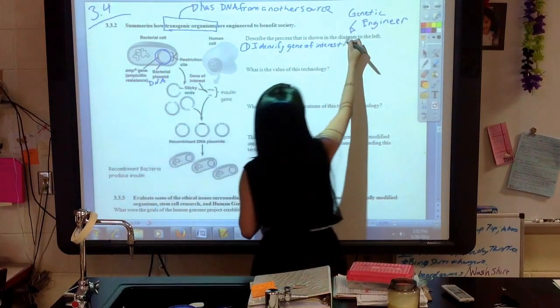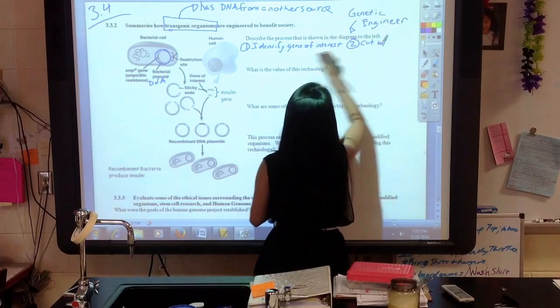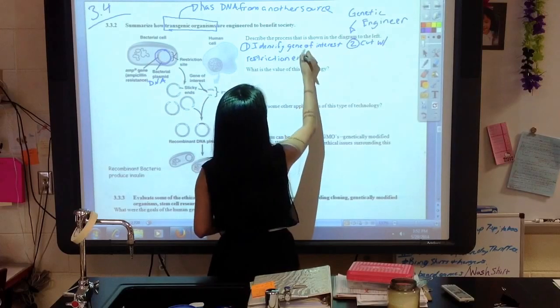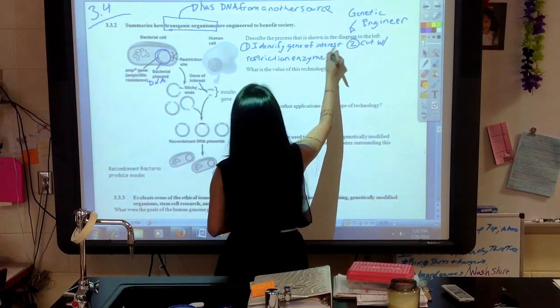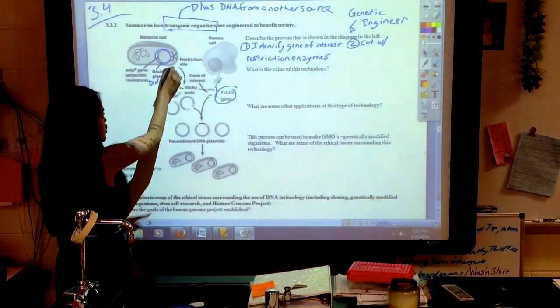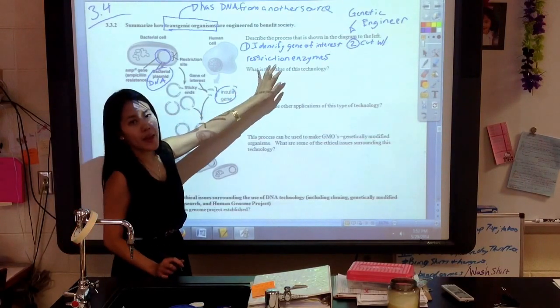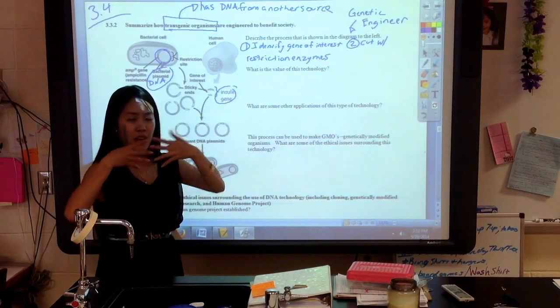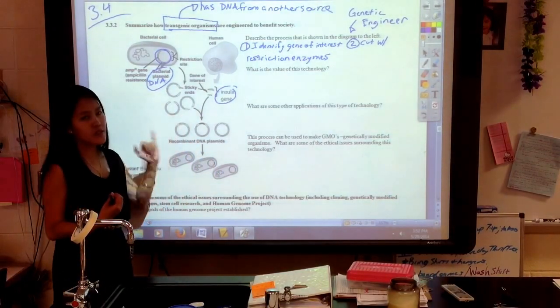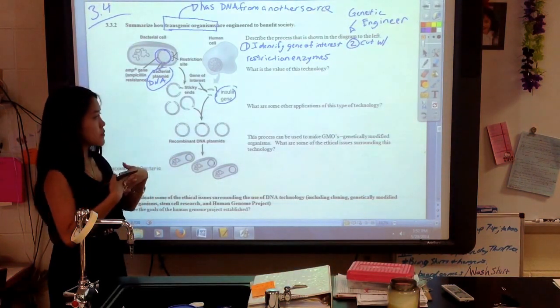The second thing that we do is we cut with restriction enzymes. We actually end up cutting both things. We cut the plasmid, the bacterial DNA plasmid, and we cut the insulin gene with the same enzyme. That actually allows us to produce a fit or an end that can fit together. The ends that are made are called sticky ends, which means that we can put them together or combine them together.